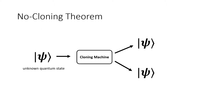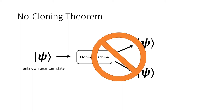The talk is about unclonable cryptography, which leverages the quantum no-cloning principle. The no-cloning principle of quantum mechanics says that general quantum information cannot be copied. There is some quantum algorithm that takes an unknown state and wants to copy it into two identical copies. Classically, it is easy since any classical computer can simply read each bit and write it twice. But in a quantum world, if you do not know the quantum state, you cannot copy a general quantum state into two copies.